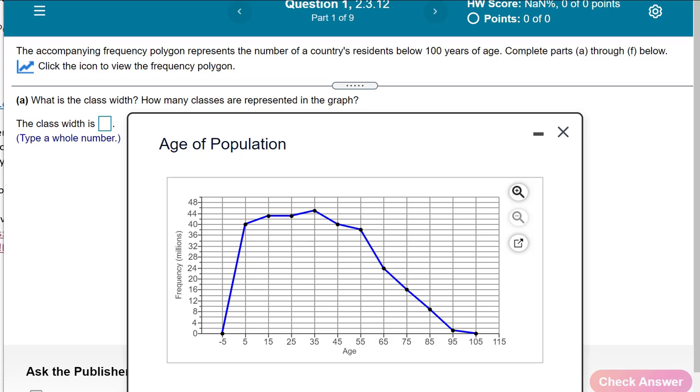A few students asked me about this question, so I'm creating this short video. It's about how to read a frequency polygon. Just note, in a frequency polygon, the first dot is at the beginning of the first bar.